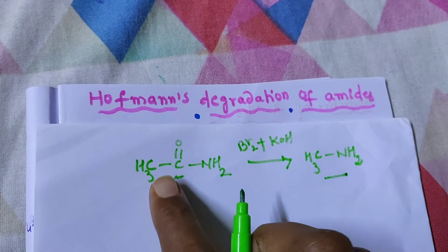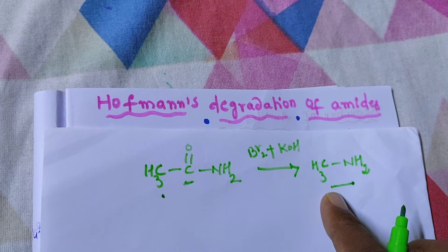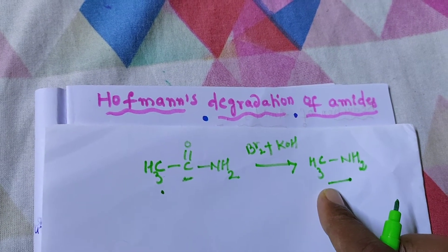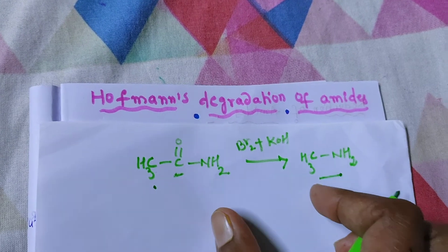Here we have two carbons. In product, we have one carbon. So, this is Hofmann's reaction.